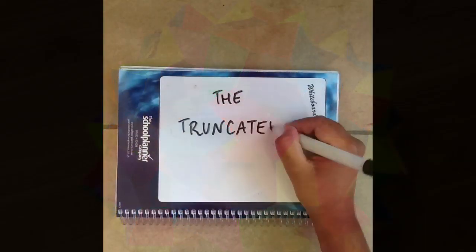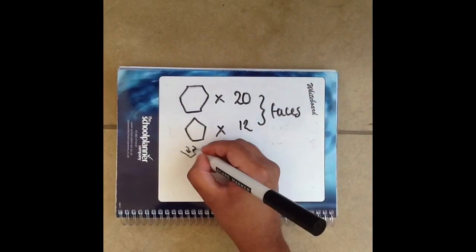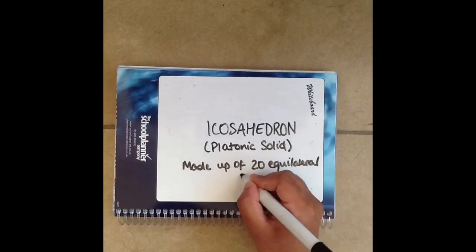The truncated icosahedron has 20 hexagon faces and 12 pentagon faces. It has 90 edges and 60 vertices. It is derived from the icosahedron, a platonic solid with 20 triangle faces.